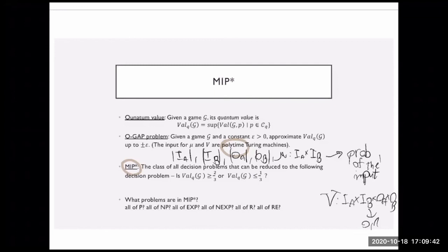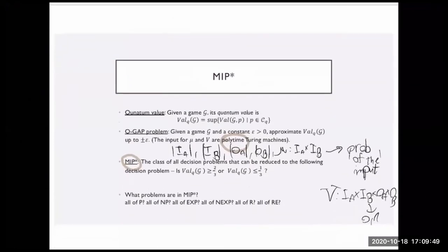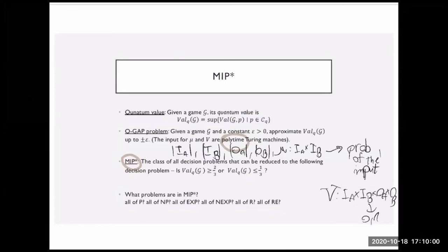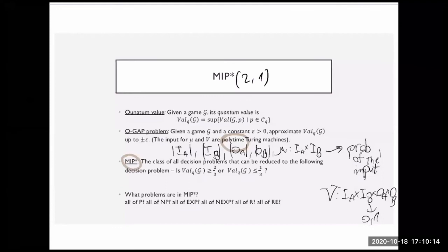The game defined here is a one-round game. The actual definition of MIP* allows any number of players and rounds, but for this talk I am only looking at MIP*(2,1) — two players, one round. A decision problem is just a subset of the natural numbers. You should think of MIP* as follows: for any natural number, generate a game whose description is not too large, with a relation between the game value and whether the element is in the set.